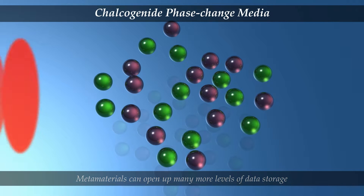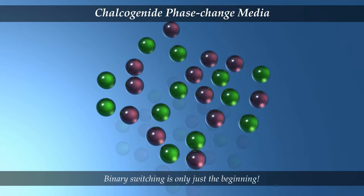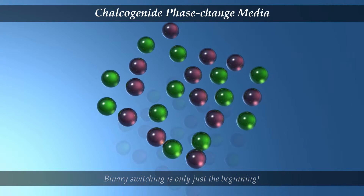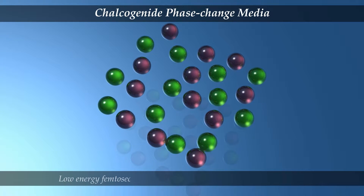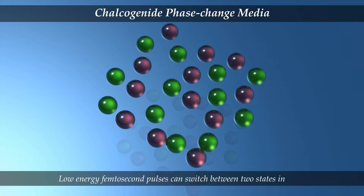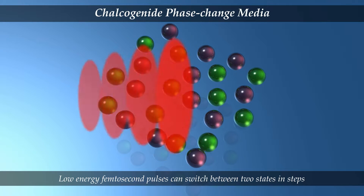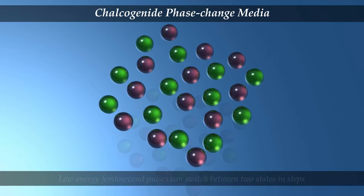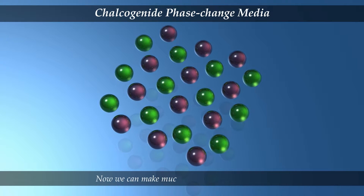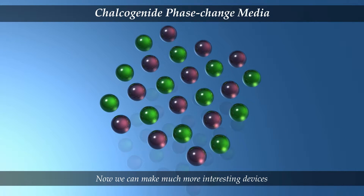By using a series of femtosecond laser pulses of low energy, we can gradually switch between the two states, giving us access to a range of properties rather than just a pair of states. And as well as high density data storage, it allows us to make much more interesting optical devices.